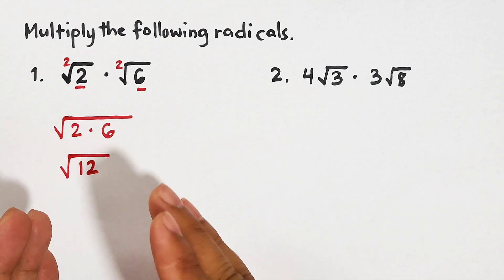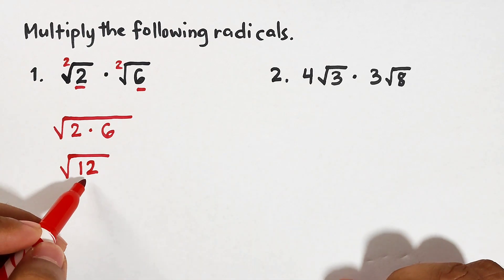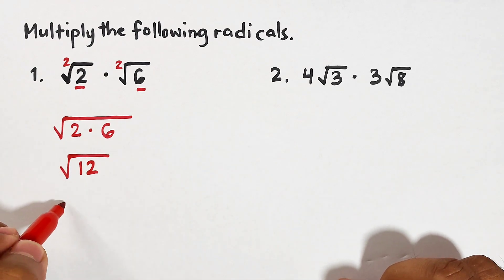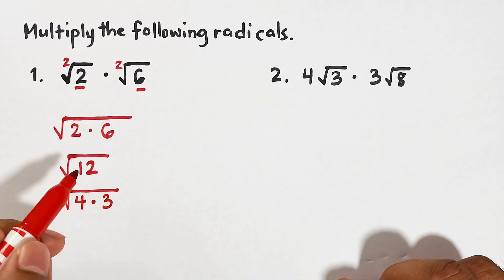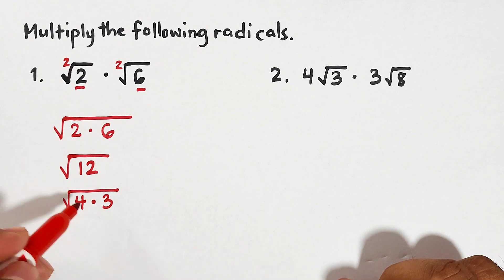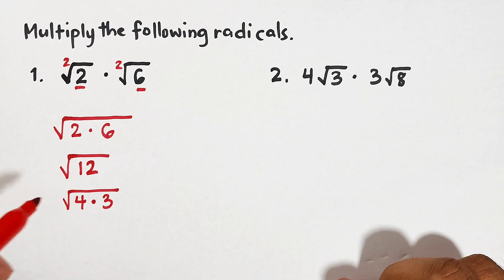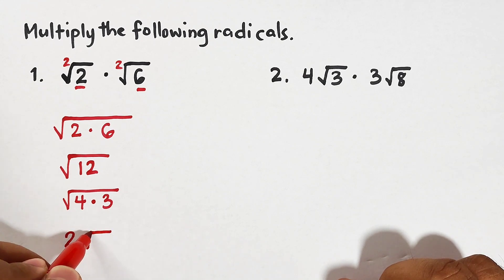Now this is not the answer yet because we can still simplify the square root of 12. And as we all know, the square root of 12 can be simplified as square root of 4 times 3, because this one is perfect square. And now what is the square root of 4? The square root of 4 is 2. We will put that outside the radical sign.